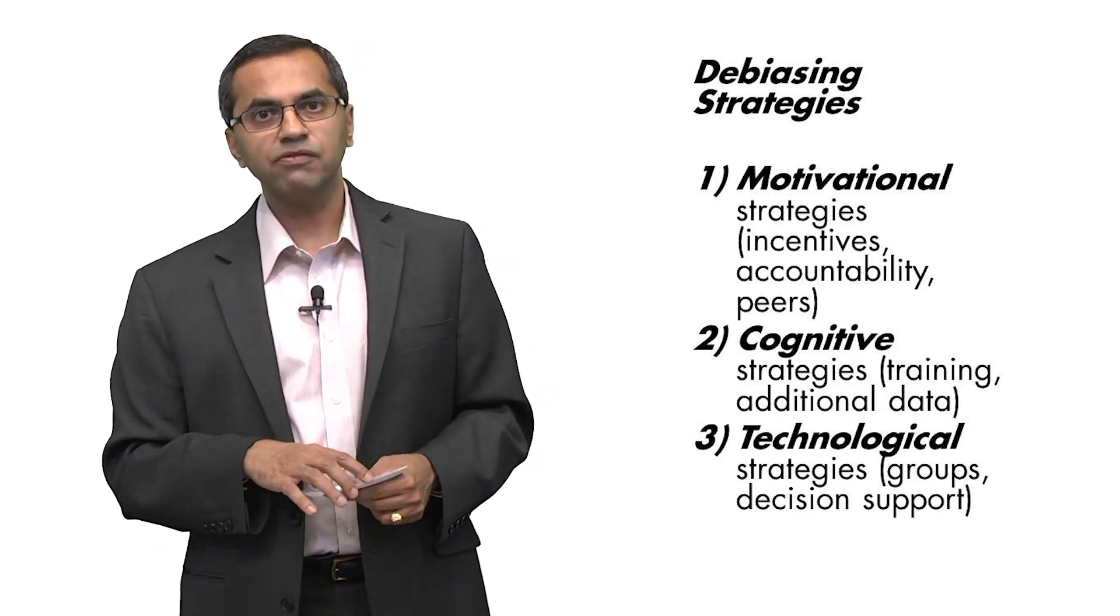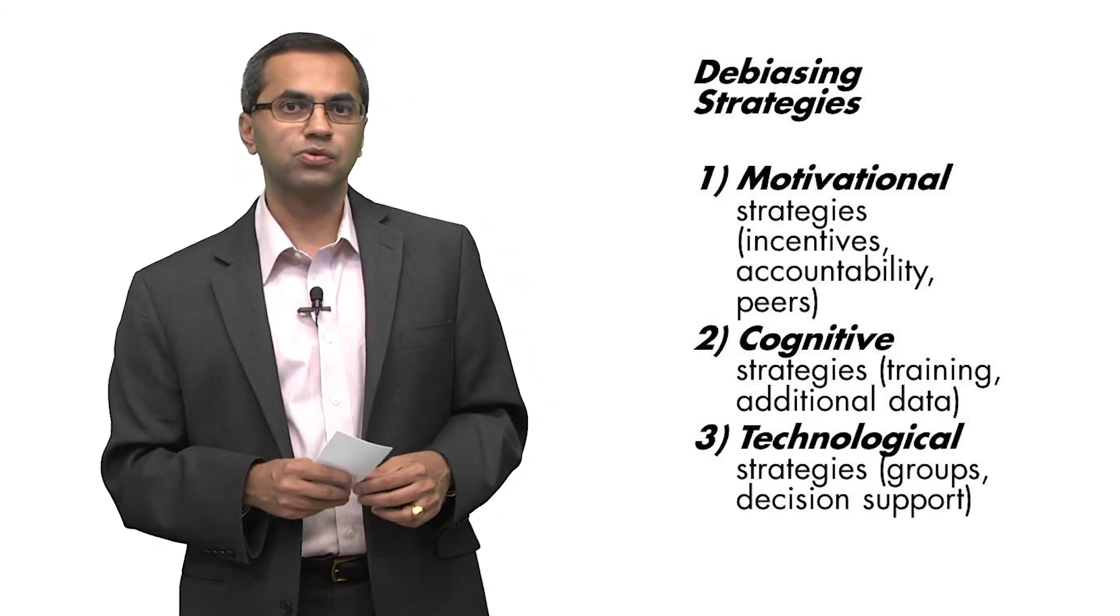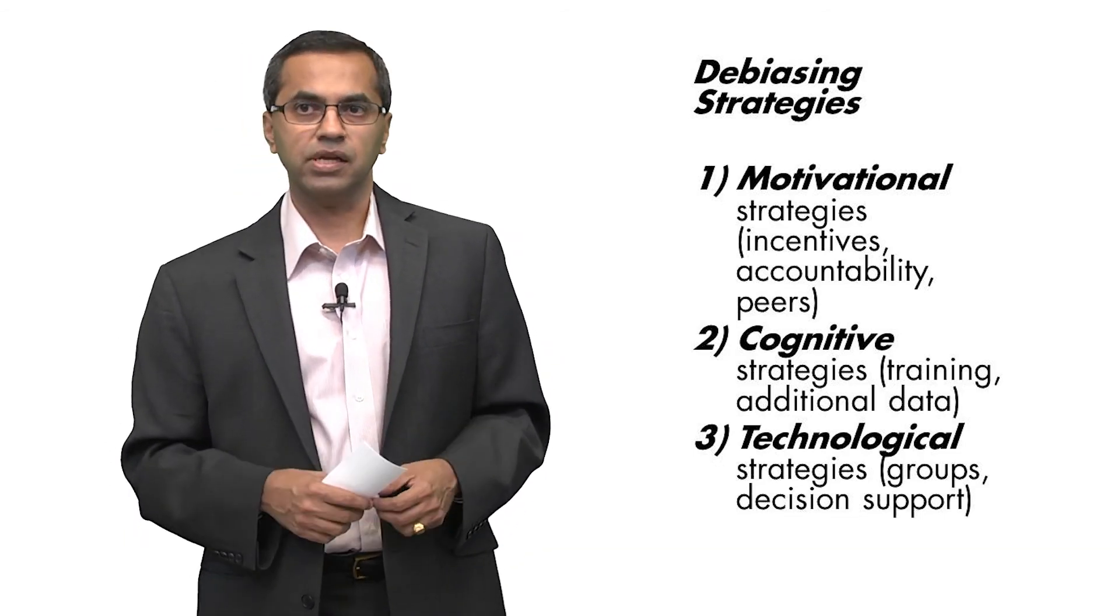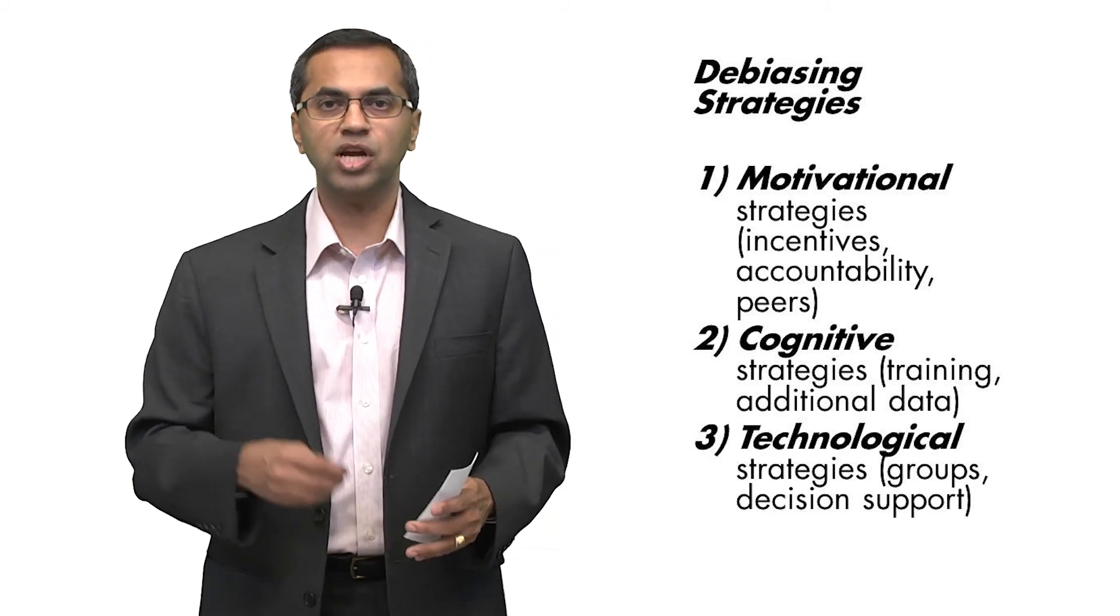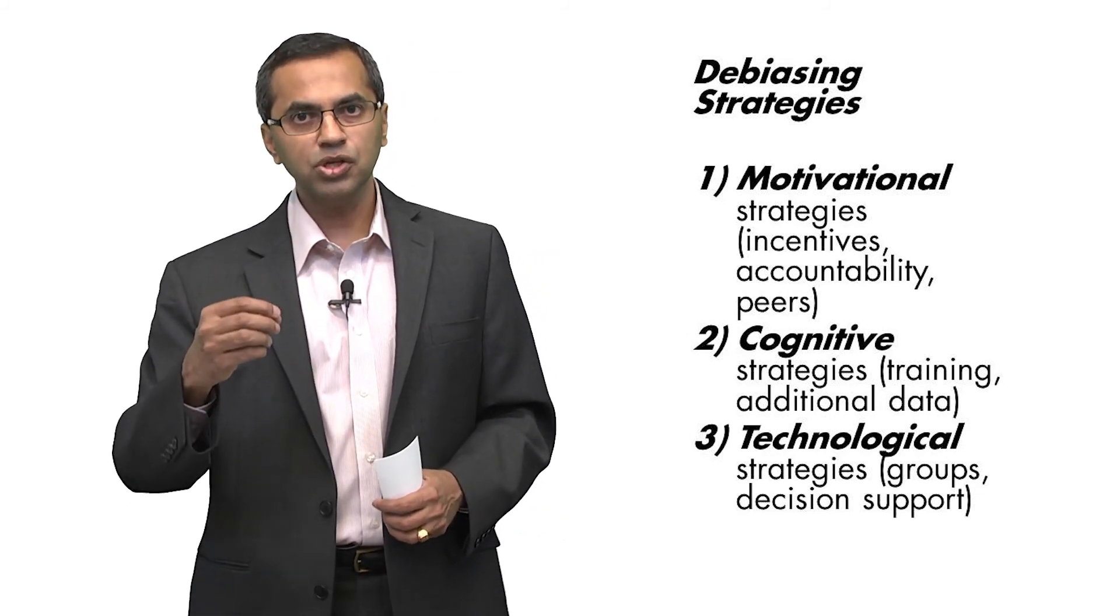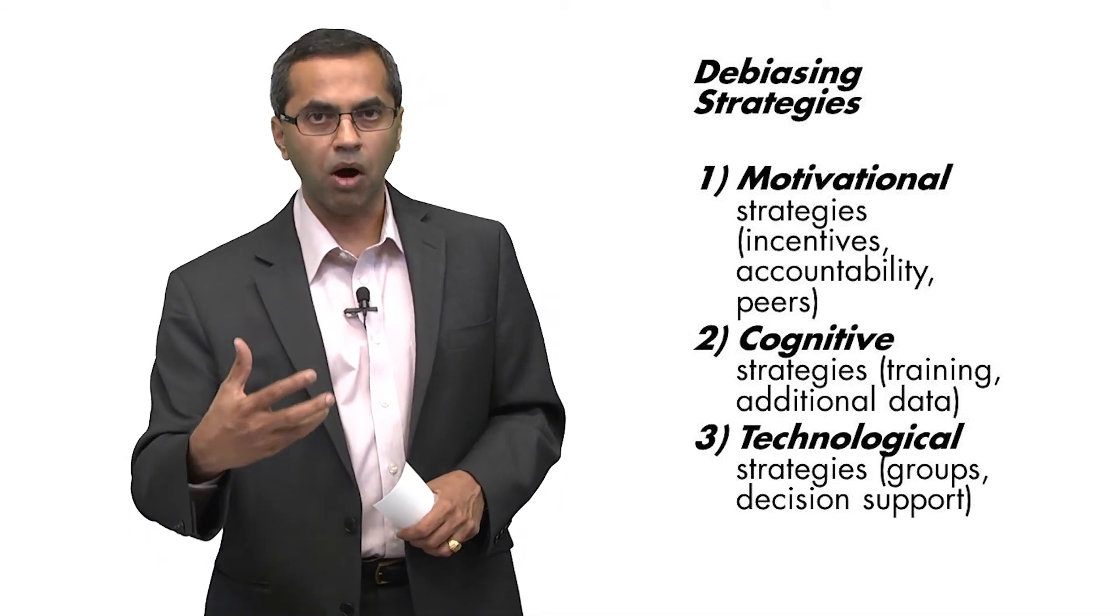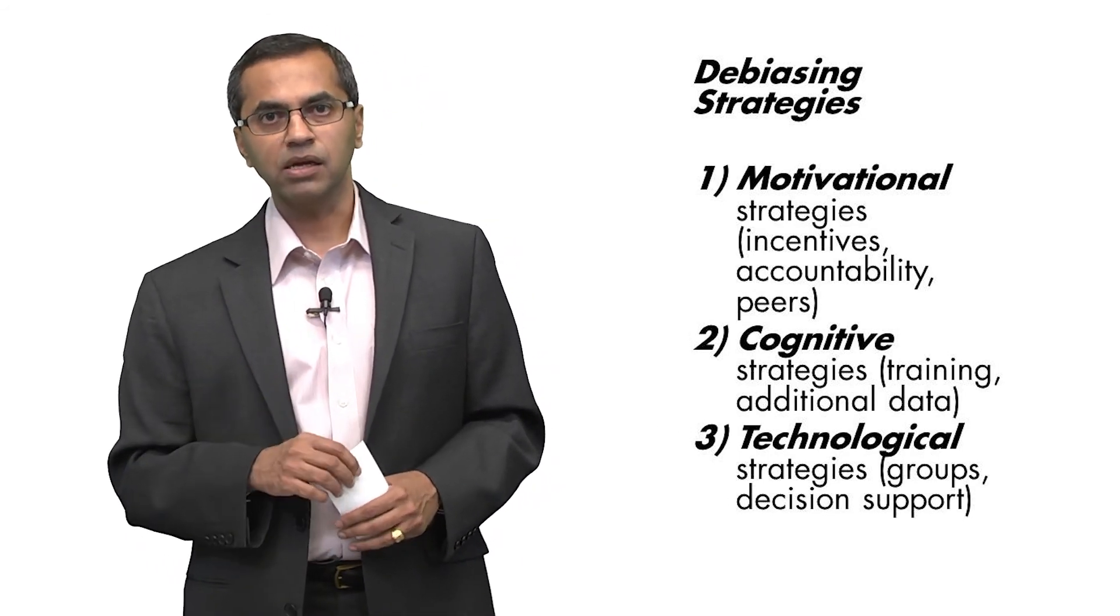The second set of strategies that we have used to reduce biases are cognitive strategies, getting people to think differently or training people or generating templates that they could use which provide them with the right kind of data or forcing them to think through model-based approaches for making decisions.